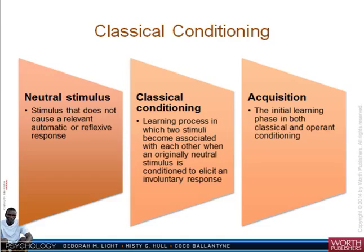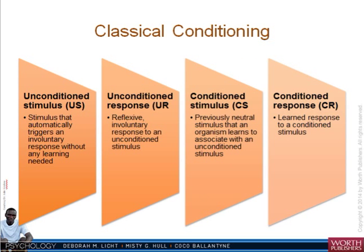This is how classical conditioning looks. There's a neutral stimulus — a stimulus that does not cause any automatic or reflexive response. There's acquisition, the initial learning phase in both classical and operant conditioning. In classical conditioning itself, the learning process involves two stimuli becoming associated when an originally neutral stimulus is conditioned to elicit an involuntary response. There's the unconditioned stimulus, which produces an unconditioned response, and then the conditioned stimulus, which produces a conditioned response.